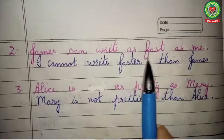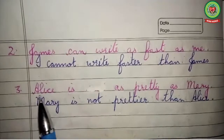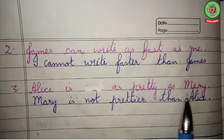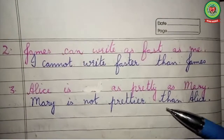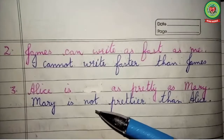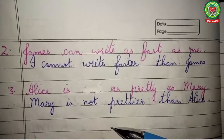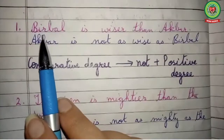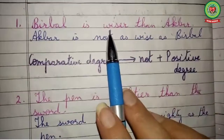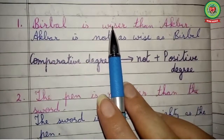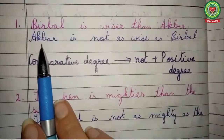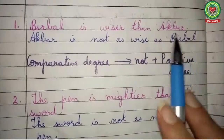'I cannot write faster than James.' Number three: 'Alice is as pretty as Mary' becomes 'Mary is not prettier than Alice.' In these sentences we changed positive degree into comparative degree and added 'not' before it. Next, let's observe examples of comparative to positive degree. Number one: 'Birbal is wiser than Akbar.' The comparative degree 'wiser' gets converted to positive degree 'wise,' and 'not' is added before it, so the answer is: 'Akbar is not as wise as Birbal.'